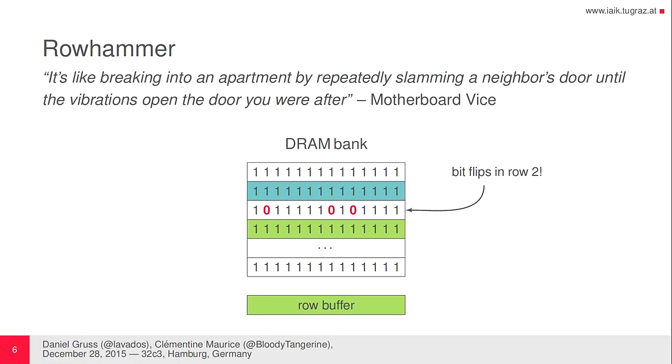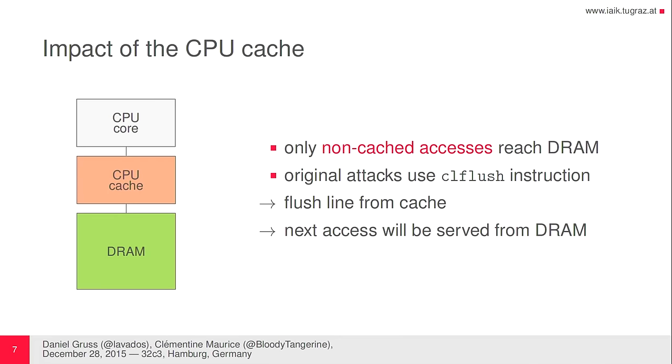This is really bad because we didn't touch this row at all and the bit changed. We can't just access data in DRAM freely because between the CPU core and DRAM you have the CPU cache. If you access data over and over again it will hit the cache, not the DRAM, and you won't get the bit flip. You need only non-cached accesses to reach DRAM. All the original attacks use the CLflush instruction, which flushes a line from the cache so that the next access is served from DRAM.